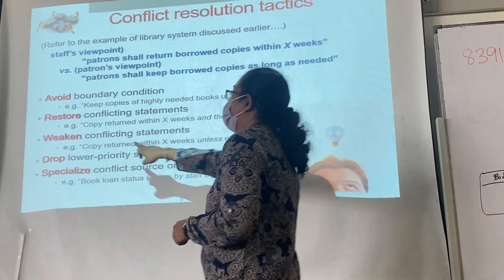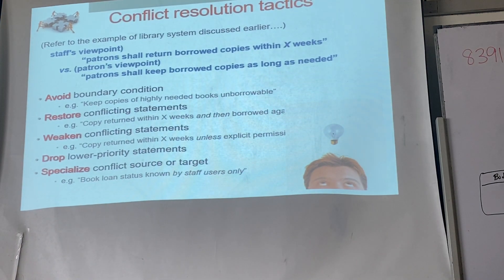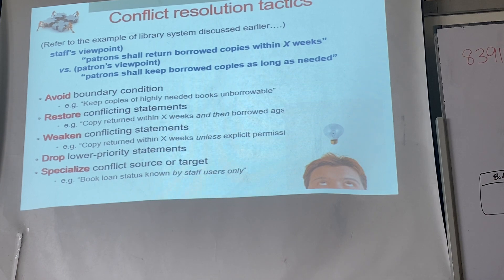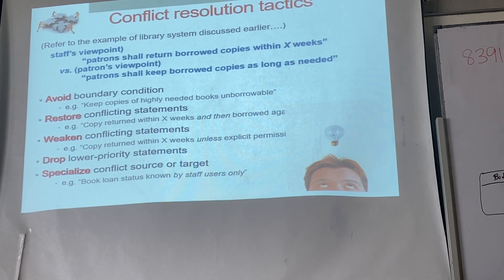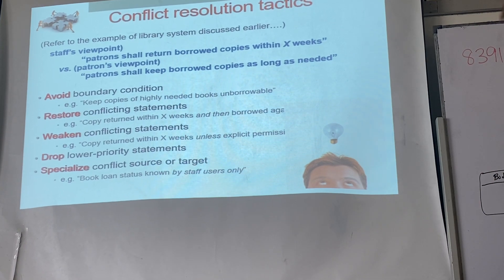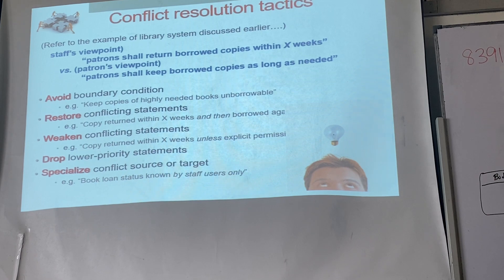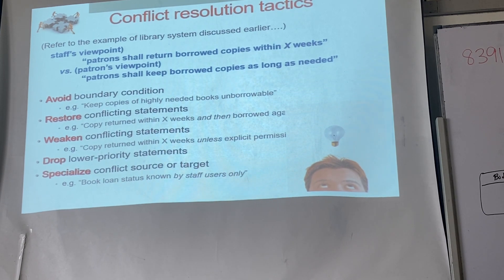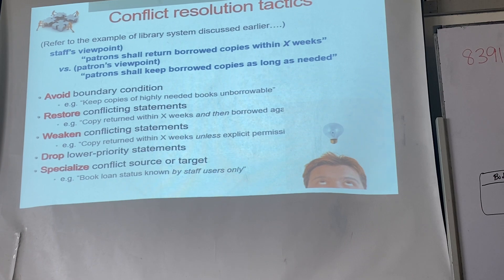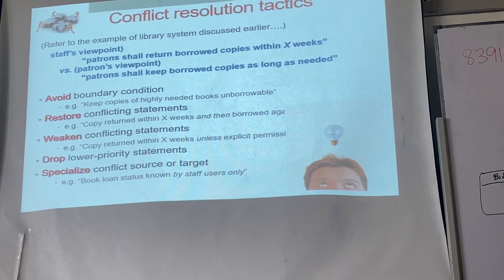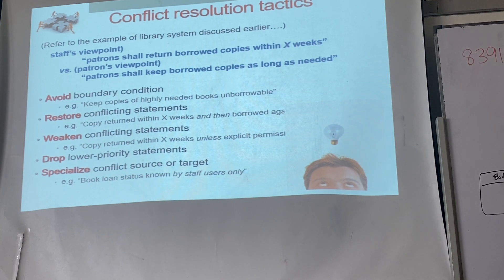Tactic three — weaken the conflict. You try to reduce the conflict. For example: copies must be returned after next week, unless explicit permission is given. You must return the book, but if you want to keep it longer you must have permission. Still some conflict exists, but it's reduced — supporting both sides with a condition. This is just one example of a solution; you can have other better solutions as well.